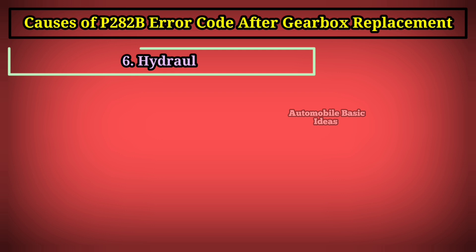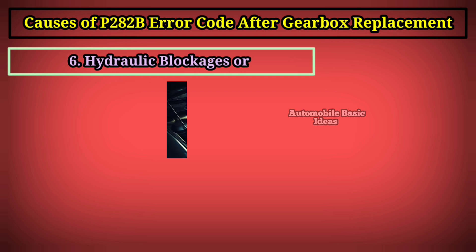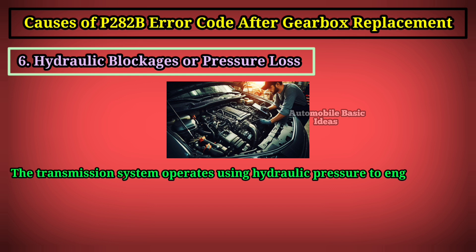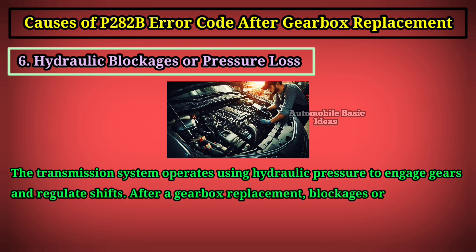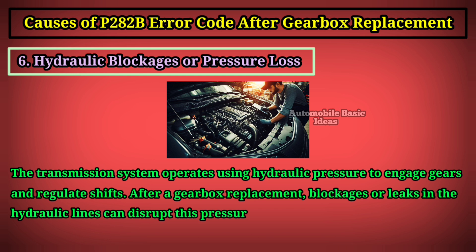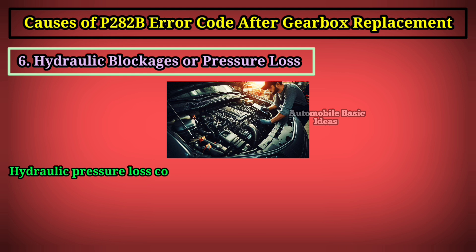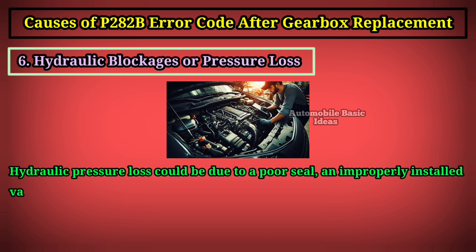A minor oversight in reassembling the transmission could lead to major issues like solenoid malfunction, causing the P282B code to be triggered. Six: hydraulic blockages or pressure loss. The transmission system operates using hydraulic pressure to engage gears and regulate shifts. After a gearbox replacement, blockages or leaks in the hydraulic lines can disrupt this pressure, preventing solenoids from performing correctly.